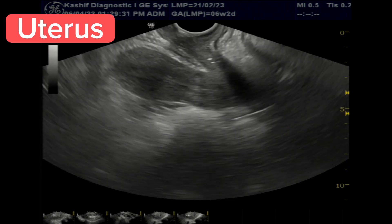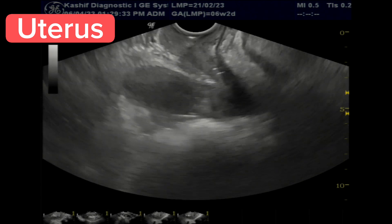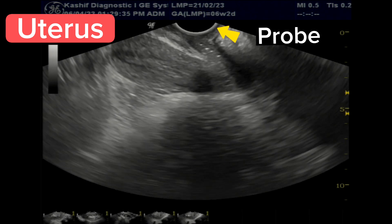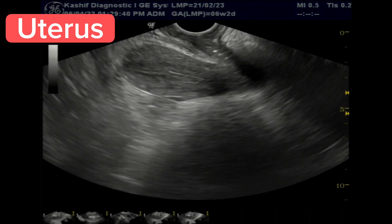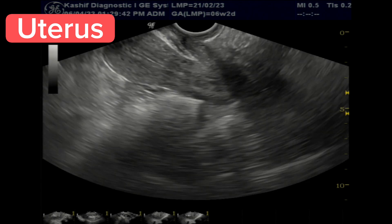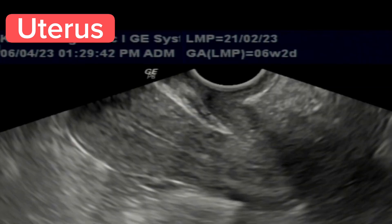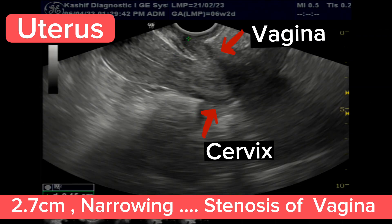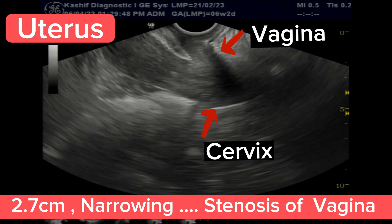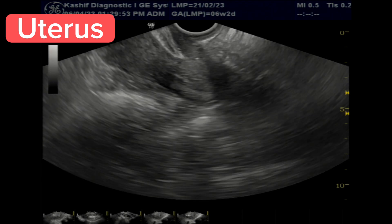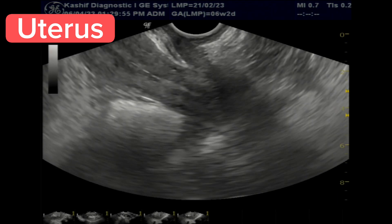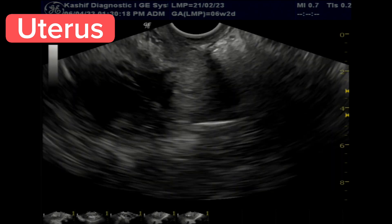Normally the probe is in contact with the cervix, but the patient feels pain on inserting with more pressure. This is a case of vaginal stenosis — a narrowing of the vagina where it becomes less flexible, drier, and more fragile. This results in dyspareunia, painful sex, and discomfort during pelvic examination. Vaginal stenosis can be acquired or congenital; this patient has the congenital form.